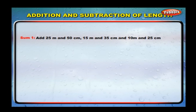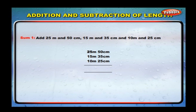Add 25 meters 50 centimeters, 15 meters 35 centimeters, and 10 meters 25 centimeters. Arrange them in order: 25 m 50 cm + 15 m 35 cm + 10 m 25 cm. We get 51 meters and 10 centimeters.